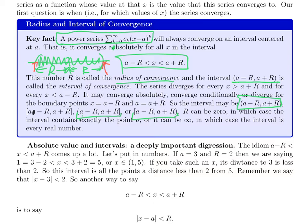Also, just to let you know, r can be zero, in which case it only converges at a and nowhere else. That's the interval of radius zero centered at a. r can also be infinity, and then the series converges for every real number.